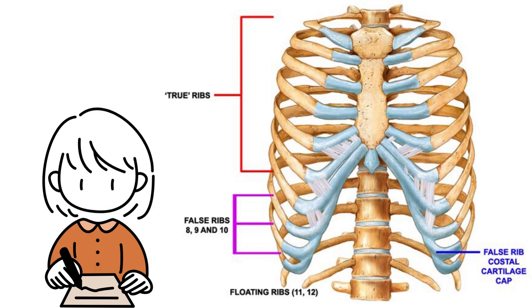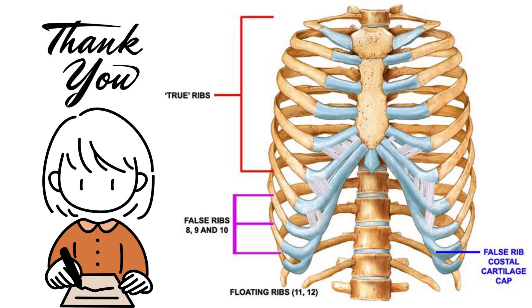And that wraps up the types of ribs — true, false, and floating. Each one plays a key role in keeping our vital organs safe and allowing us to breathe with ease. Thanks for listening.